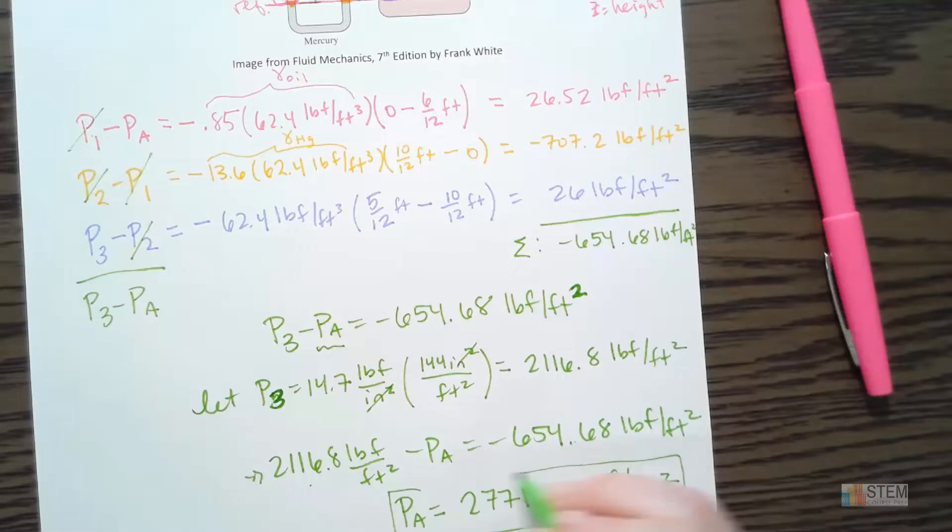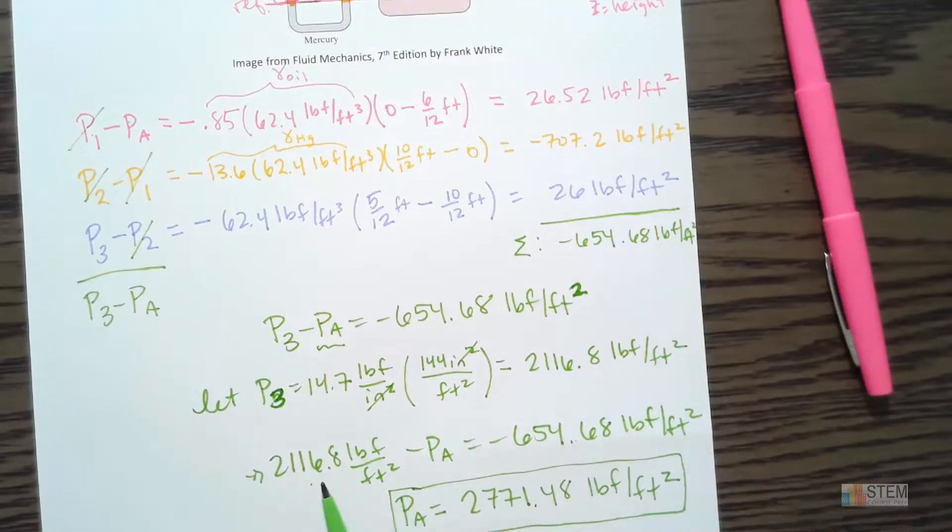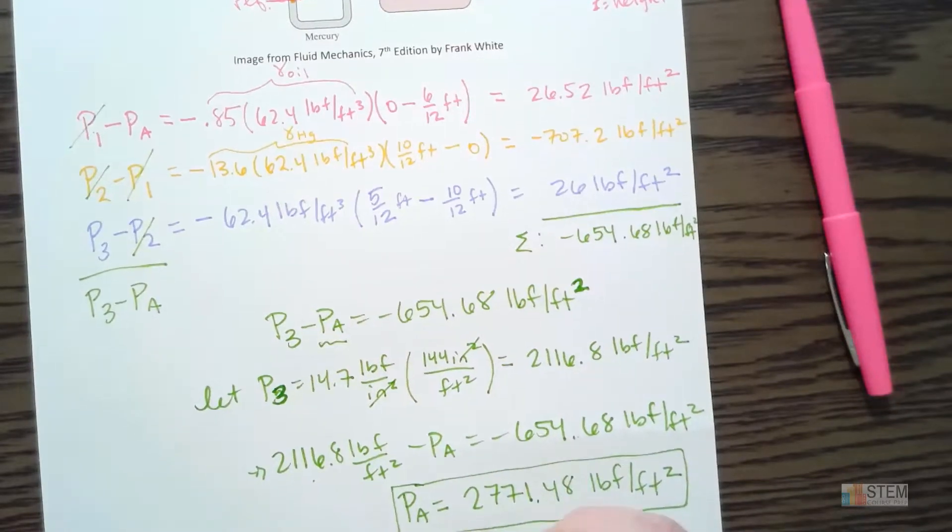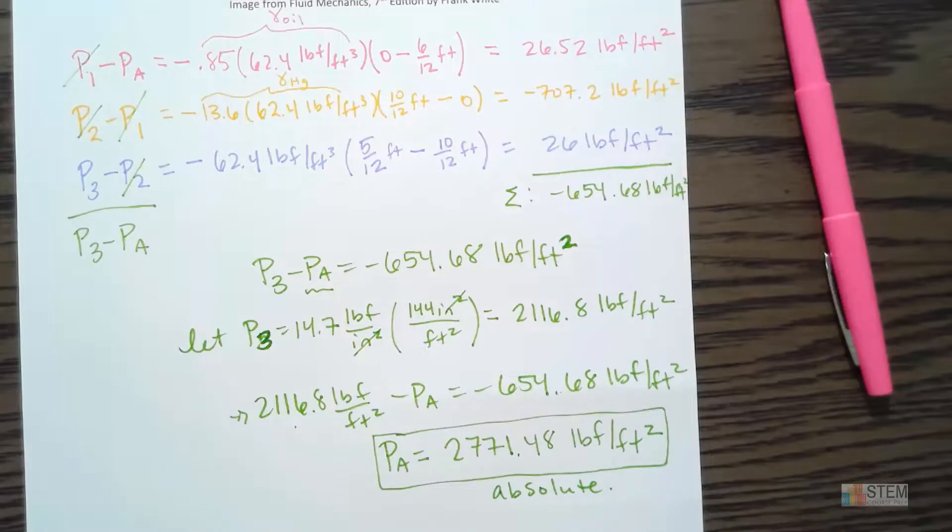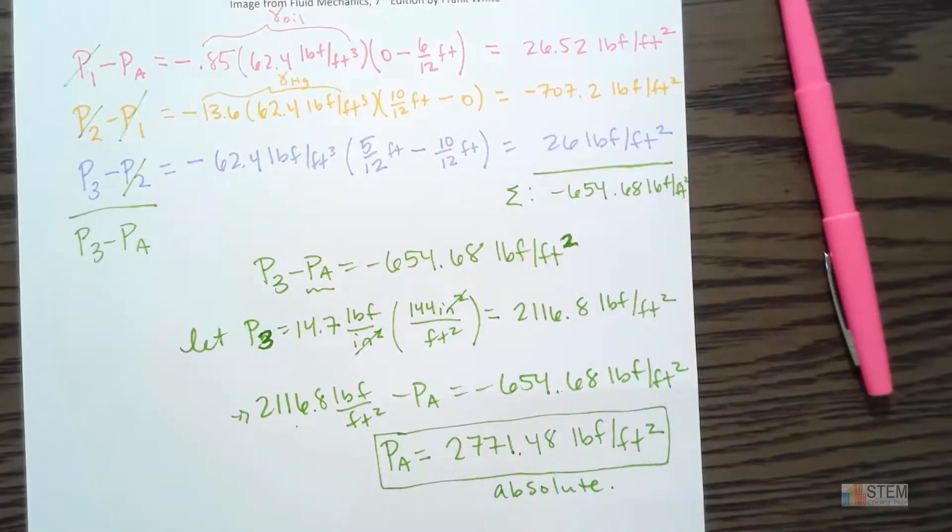Alright. And notice we included atmospheric pressure in here. So that's what gives us this absolute pressure. Because remember there's difference between absolute pressure and gauge pressure. Absolute pressure are going to include that atmospheric pressure like we did here. Okay. So this would be our pressure at point A. Alright. So 2,771.48 pounds per square foot.